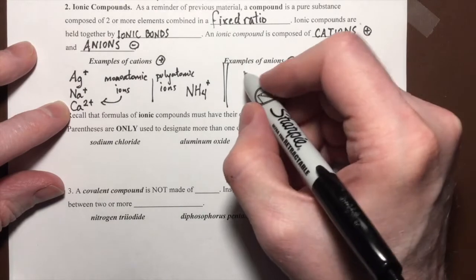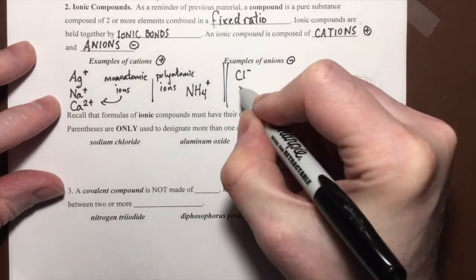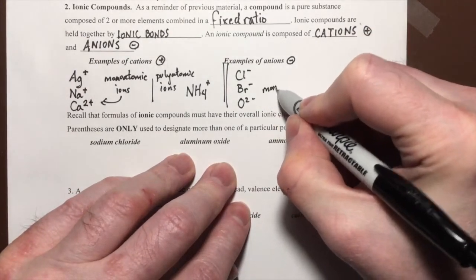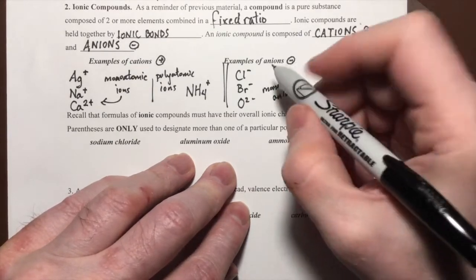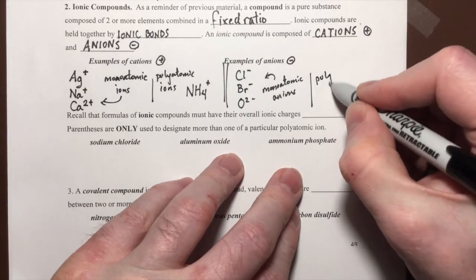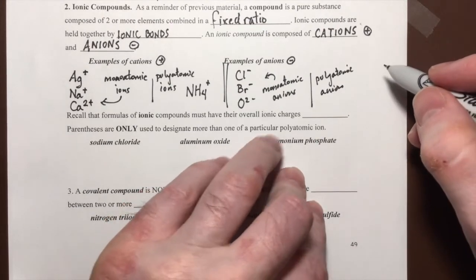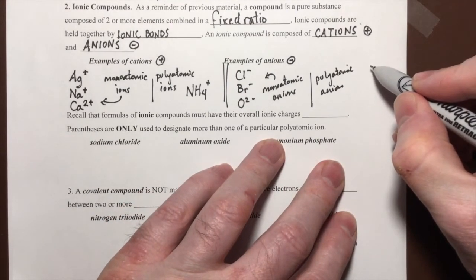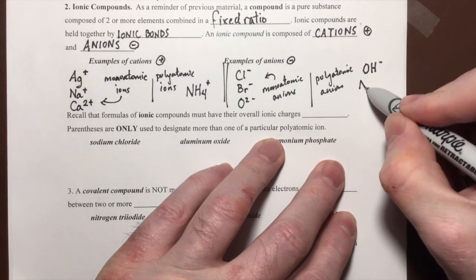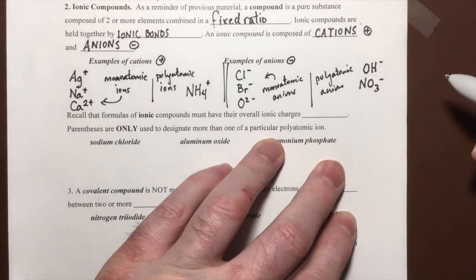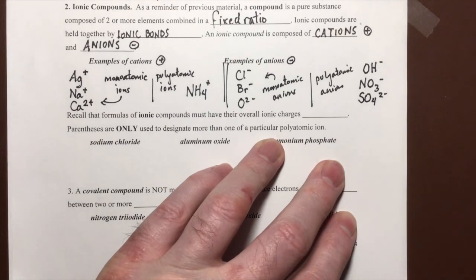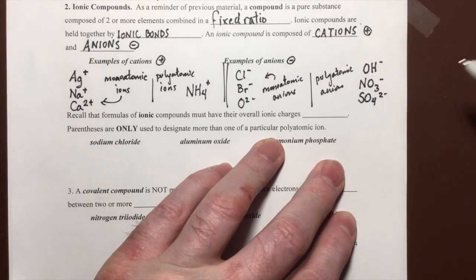So for anions we're going to have some monoatomic anions. So we'll have a chloride, a bromide, an oxide for example. And these are monoatomic anions because they are made of only one atom. In contrast we can have polyatomic anions. And so examples of those are some that you may recall from your previous chemistry. Capital O, capital H with a negative charge. That's a hydroxide. You may recall NO3 with a negative charge. That's a nitrate. And another example is SO4 with a 2- charge on it. That's a sulfate.